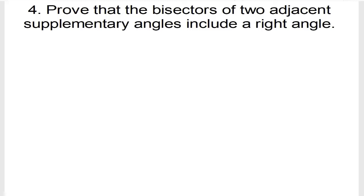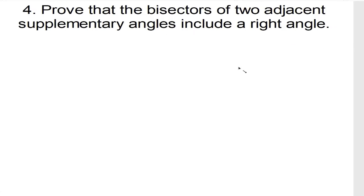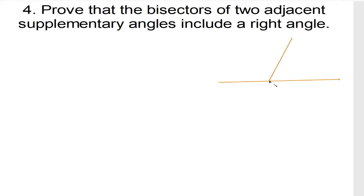Now we are doing Exercise 6.1, question number 4. Prove that the bisector of two adjacent supplementary angles include a right angle. So we need to first understand what the question is saying. The question says that there is a bisector of two adjacent supplementary angles, so let us make an adjacent supplementary angle.